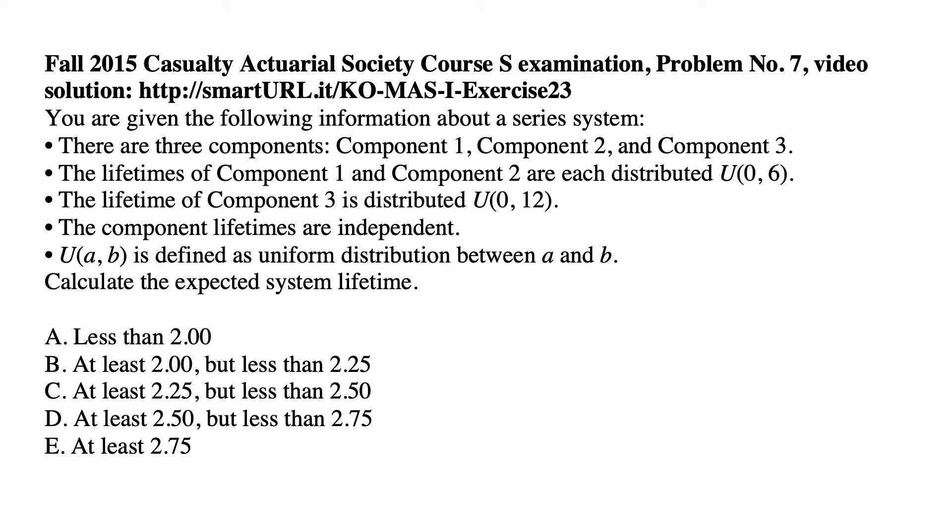Here's a problem for today for exam MAS 1, that's Casualty Actuarial Society exam on modern actuarial statistics part 1. You are given the following information by the series system. There are three components: component 1, component 2 and component 3. The lifetimes of component 1 and component 2 are each distributed uniformly on the interval from 0 to 6. The lifetime of component 3 is distributed uniformly on the interval from 0 to 12. The component lifetimes are independent. U(a,b) is defined as uniform distribution between a and b. Calculate the expected system lifetime.